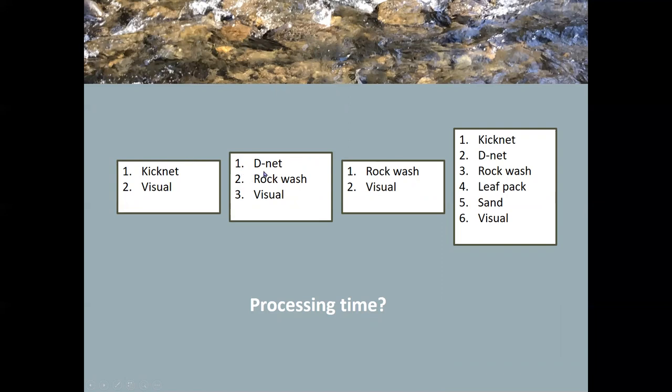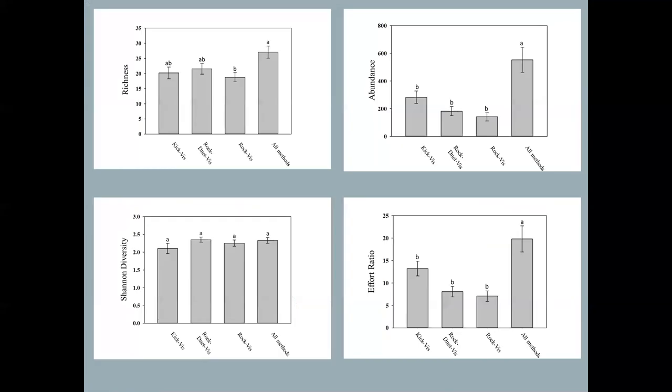Which would have very low processing time, but we're not getting like the additional species that we may be picking up with a D-Net. And then those combinations compare to doing the full six method bioassessment. And so first start with richness.